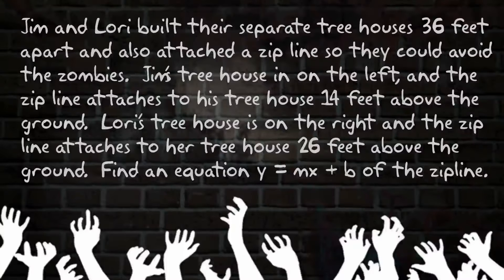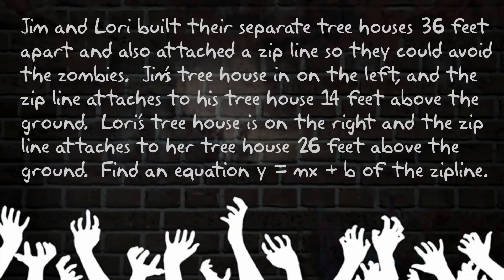Lori's tree is on the right, and the zip line attaches to her tree house 26 feet above the ground. Find the equation y equals mx plus b of the zip line.